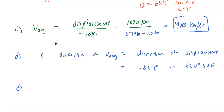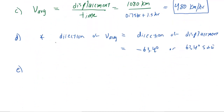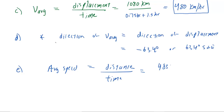Part E asks for the average speed, which is slightly different from average velocity. Average speed equals the distance — not displacement — divided by the time. The airplane first flew 483 kilometers, then 966 kilometers south. Adding those together and dividing by the same total time gives about 644 kilometers per hour, which is the correct answer to part E.